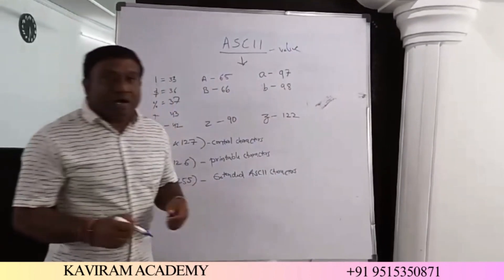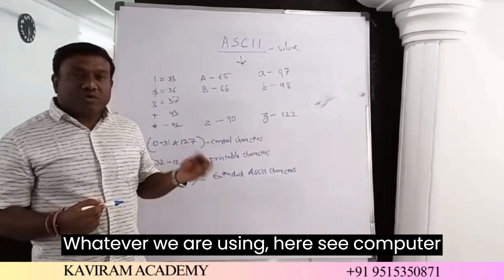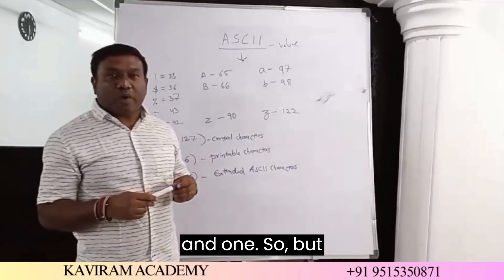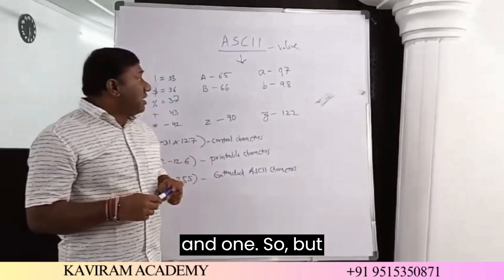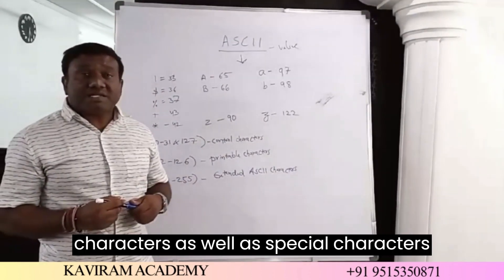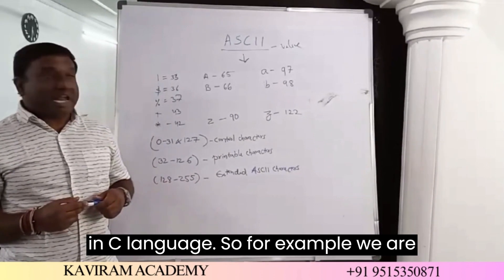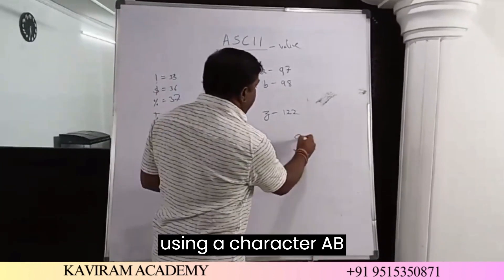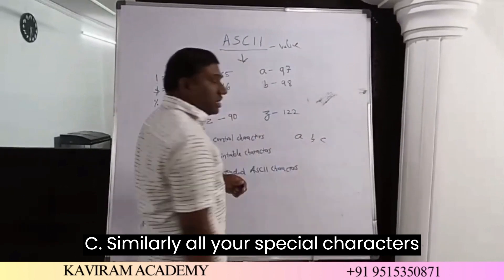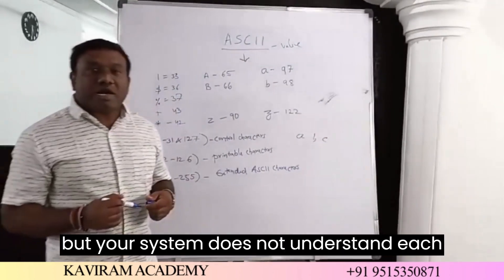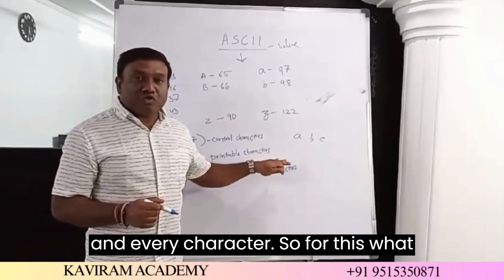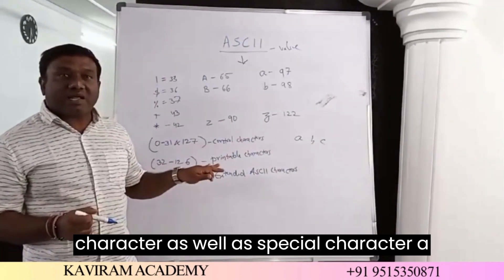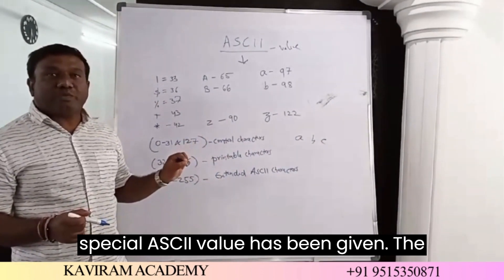Basically, the computer understands only two things: either 0 or 1. But we are using different characters as well as special characters in C language — for example, characters A, B, C, and all special characters. But your system does not understand each and every character. So for each character as well as special character, a special ASCII value has been given.